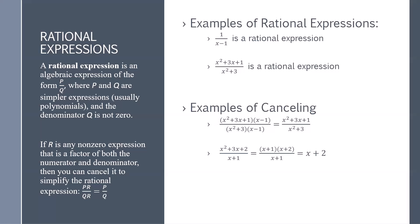Another example: we might have x squared plus 3x plus 2 over x plus 1. The numerator factors — we want two numbers that multiply together to give 2 and add together to give 3, so 1 and 2. So we have x plus 1 times x plus 2 over x plus 1. The x plus 1 terms cancel, and we're left with x plus 2.